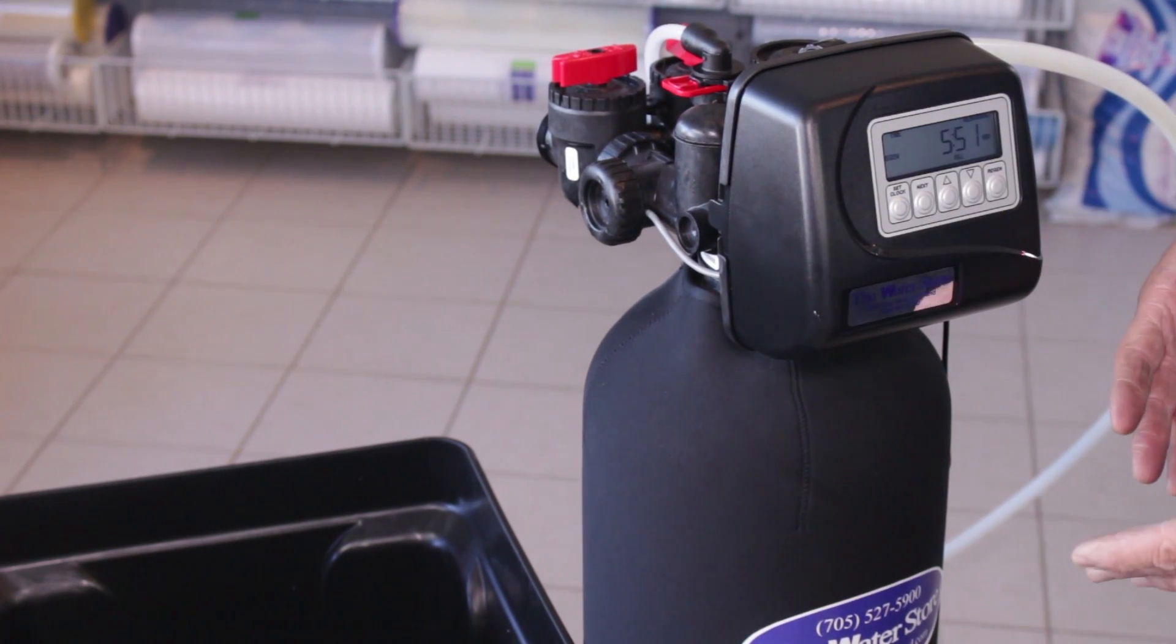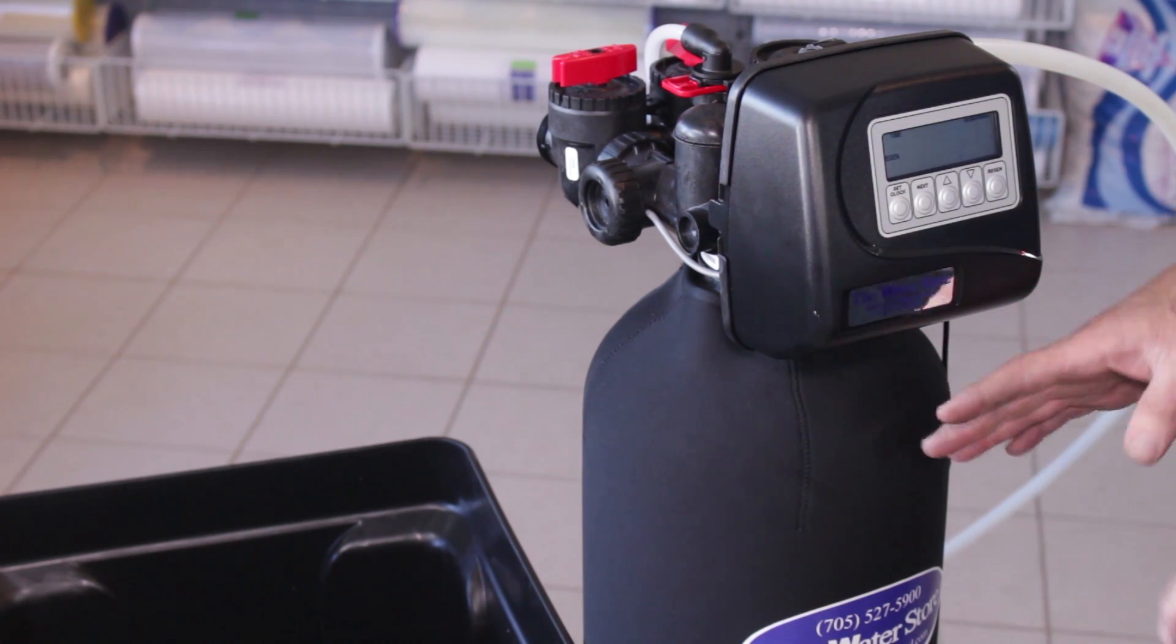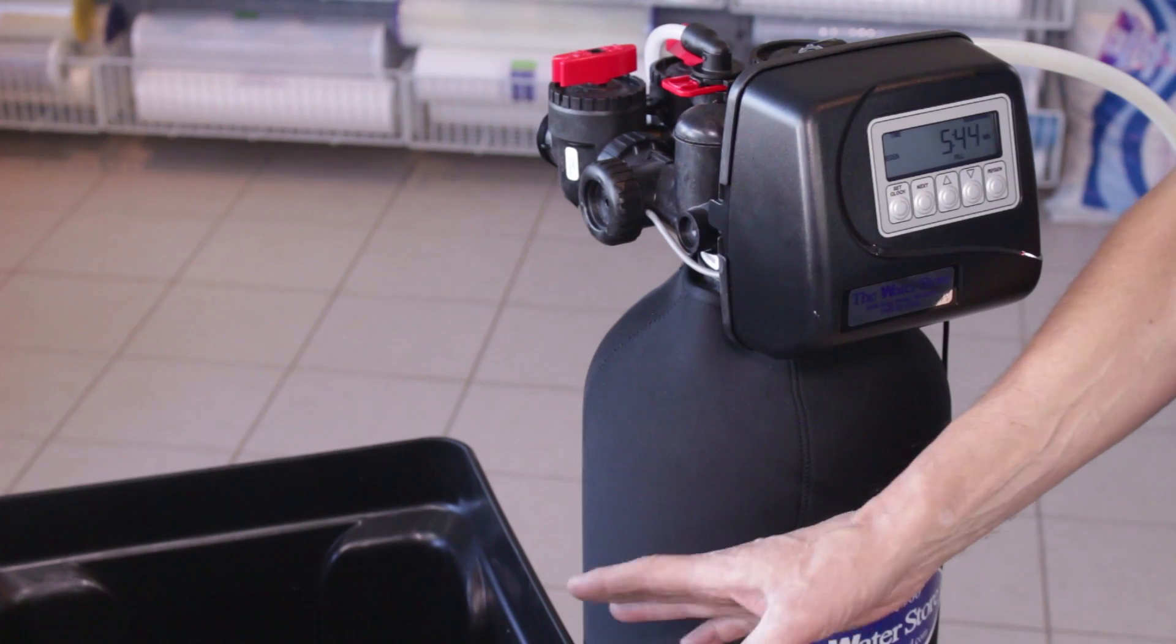So now what it's going to go to is the fill cycle. This is where the water softener puts the correct amount of water in with the salt and it's going to start counting down there. So in this particular programming, showing five minutes and 40 some odd seconds of water that's going to go in there.